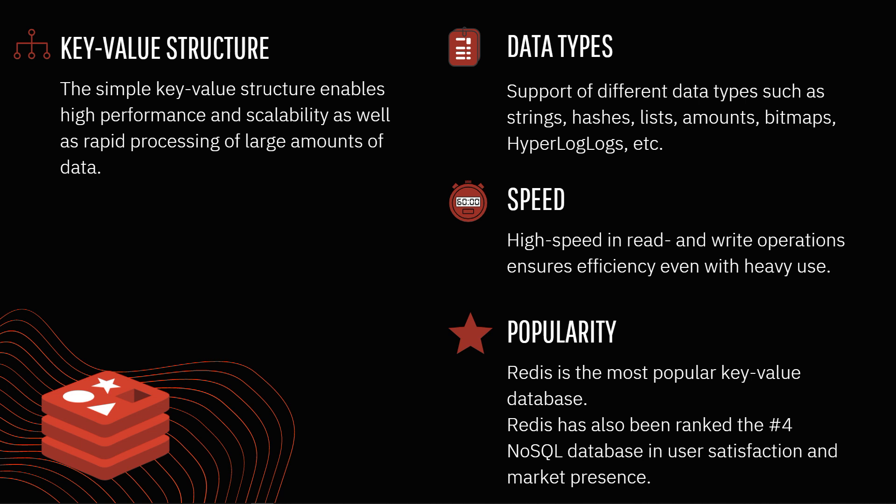In terms of speed, Redis has high speed in read and write operations, which ensures efficiency — it's super fast, because all these key-value pairs are stored in RAM or random access memory. Your processor grabs them very quickly, retrieves and displays them on demand. Redis is also the most popular key-value database, ranked fourth among NoSQL databases in user satisfaction and market presence — similar to MongoDB but with key-value pair structure.